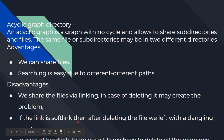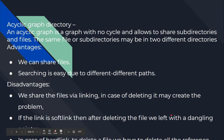If the link is a softlink, then after deleting the file we are left with a dangling pointer. There are two types of links: softlink and hardlink. With a softlink, after deleting the file the pointer remains dangling — it still holds a value referencing a file that no longer exists. In the case of a hardlink, after deleting the file the entire pointer is deleted — all references are removed and there is no reference to the file at all, which means it is deleted from the root.